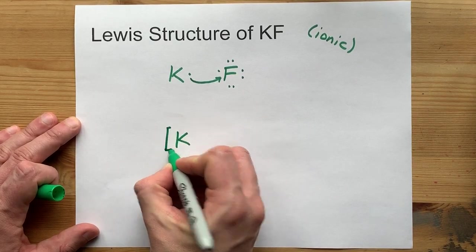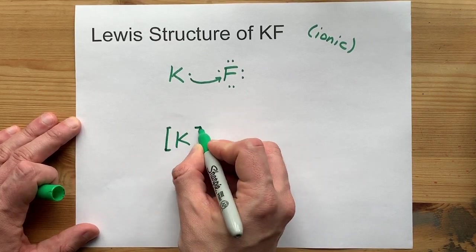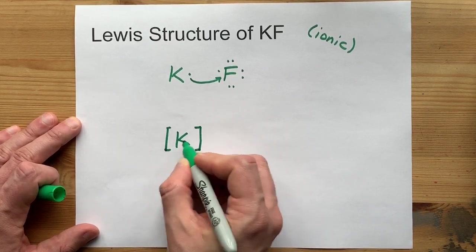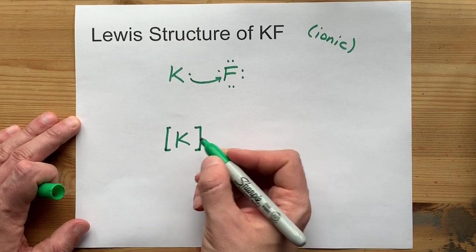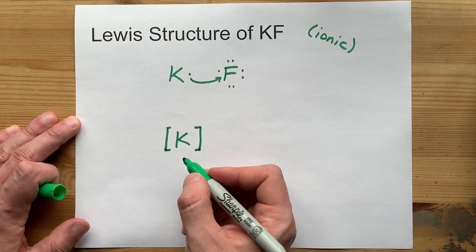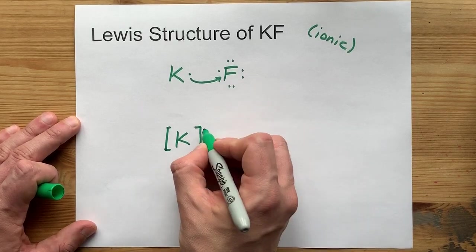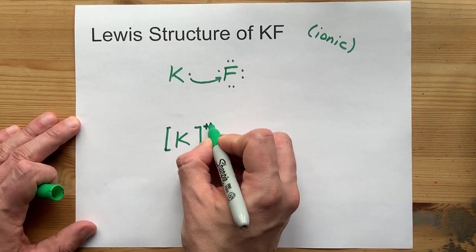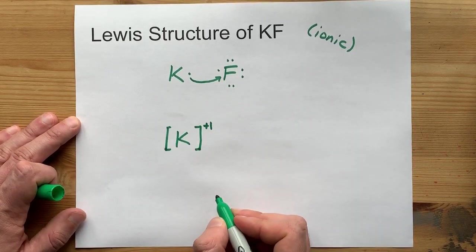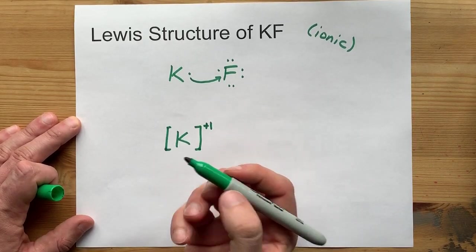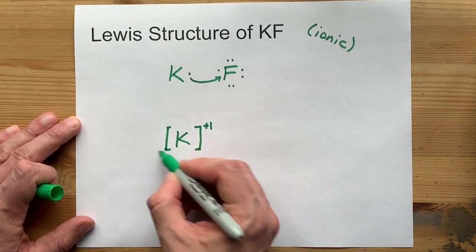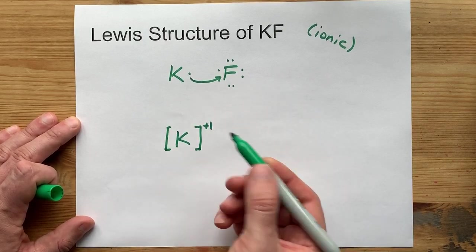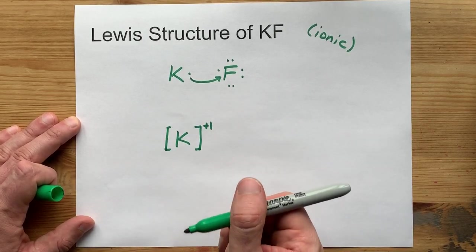That means we'll draw it with no dots around it, and because it gave away an electron, it has a plus 1 charge. These square brackets are how we show it's an ion, meaning it has a charge at all.